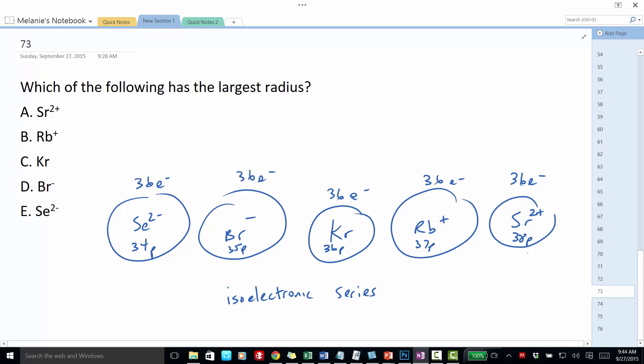So the one with the greatest number of protons, strontium, is going to be the smallest. So the largest is going to have the fewest number of protons, because it has the smallest nuclear charge. So the selenide ion actually has the largest radius.